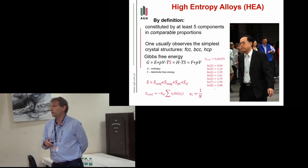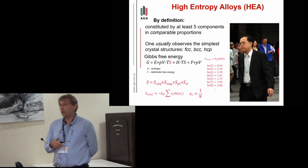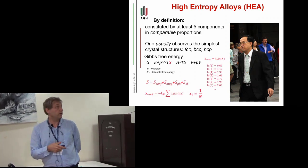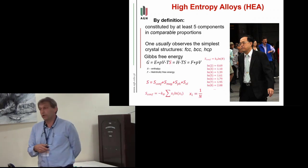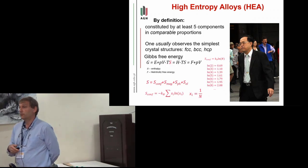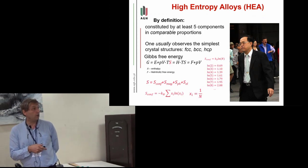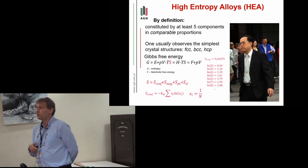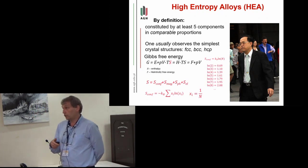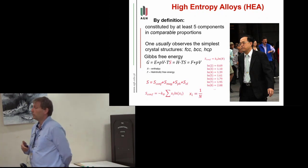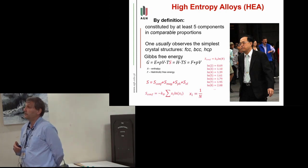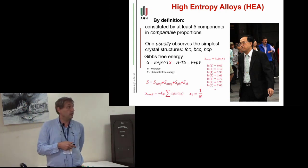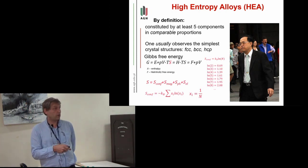The new way of thinking is based on preparing alloys by melting at least five components in comparable proportions. Usually we expect a very complicated phase diagram, but in this case we observe very simple structures, unexpectedly FCC or BCC, sometimes HCP structures.